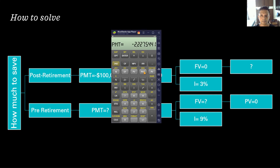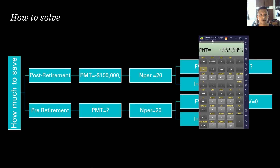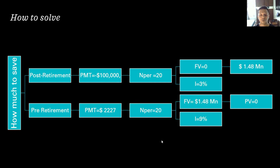Now press CPT and PMT. If a person needs to withdraw $100,000 annually after 20 years at 3% post-retirement interest, they need to save $2,227 per month at 9% annual interest compounded monthly. It's less about the calculator and more about how you think through the question. That's how you calculate present and future value using the BA II Plus calculator — see you in the next lesson.